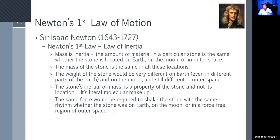Mass is inertia. The amount of material in a stone is the same whether the stone is located on Earth, the Moon, or outer space — a 10-kilogram ball of lead is 10 kilograms everywhere. The weight of the stone would be very different on Earth than in space, and can even differ between New Orleans at sea level and Denver at altitude. The stone's inertia and mass haven't changed — the location has changed. The same force would still be required to move that stone whether on Earth, the Moon, or in a force-free area.